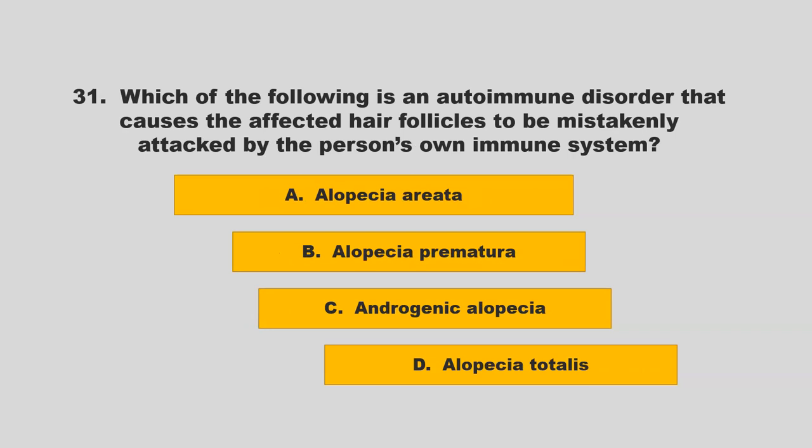Which of the following is an autoimmune disorder that causes the affected hair follicles to be mistakenly attacked by the person's own immune system? Is it alopecia areata, alopecia prematura, androgenic alopecia, or alopecia totalis? If you chose A, alopecia areata, you are correct.